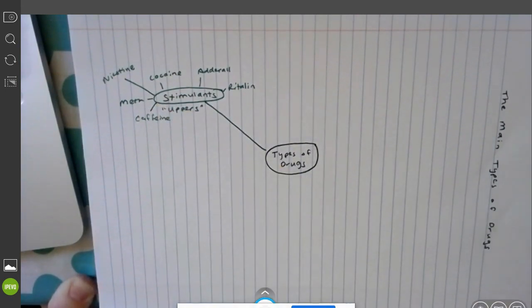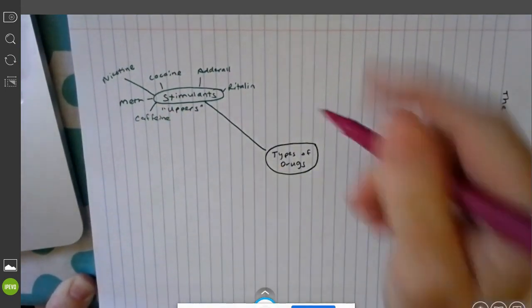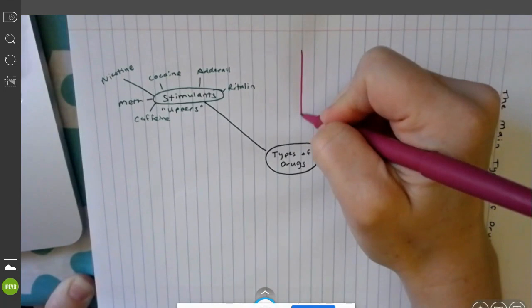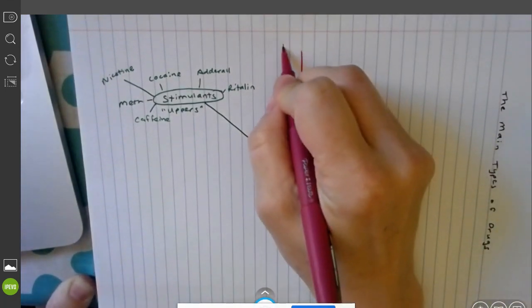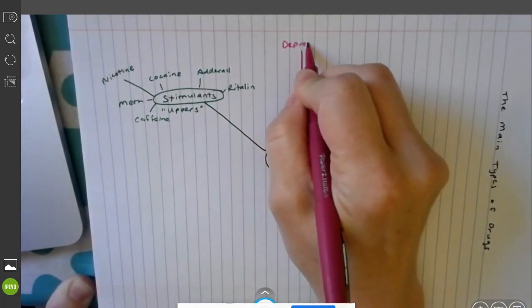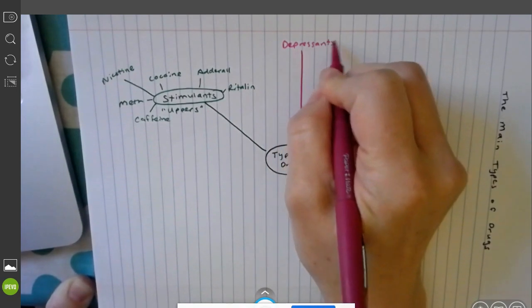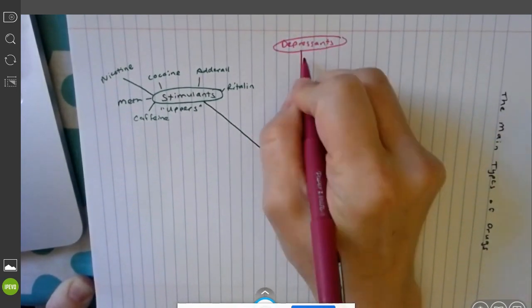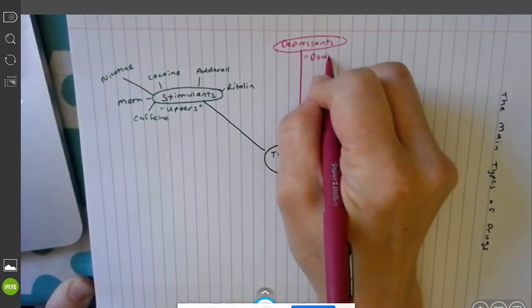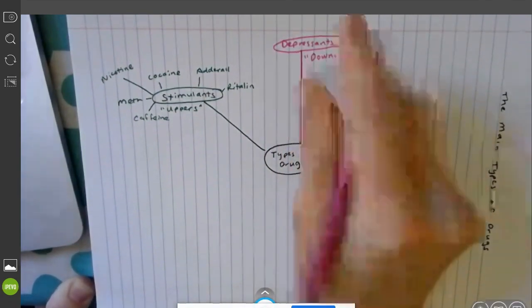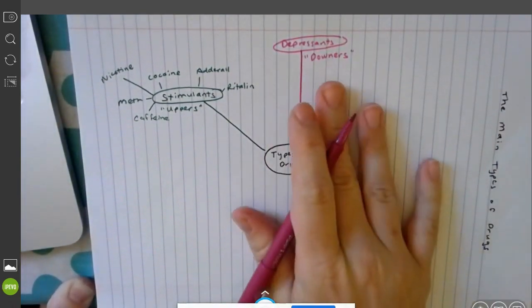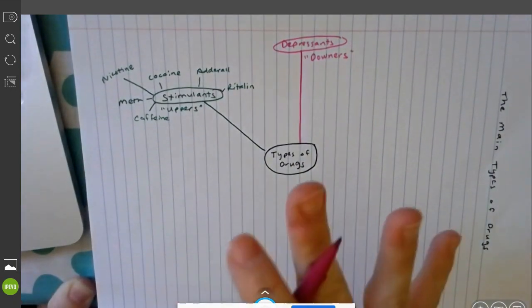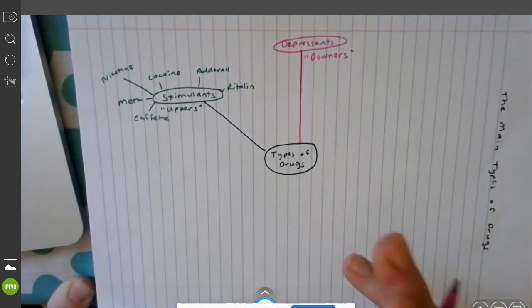The opposite of that is going to be your depressants. These are going to be your downers. They're going to slow everything down: your heart rate, your breathing rate. They're relaxing, muscle relaxers, etc.